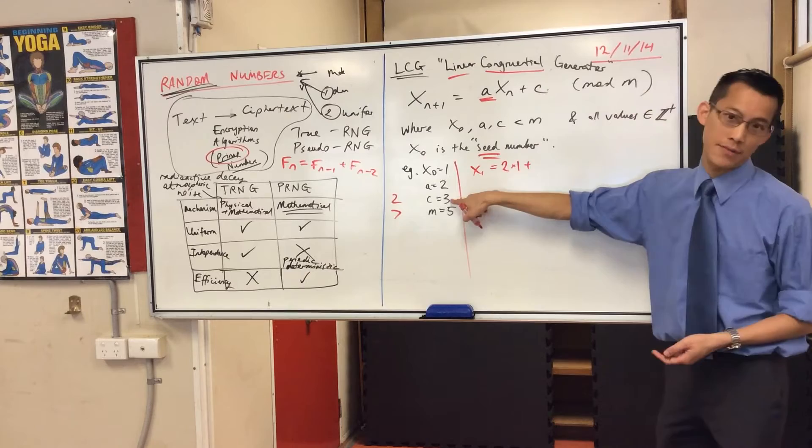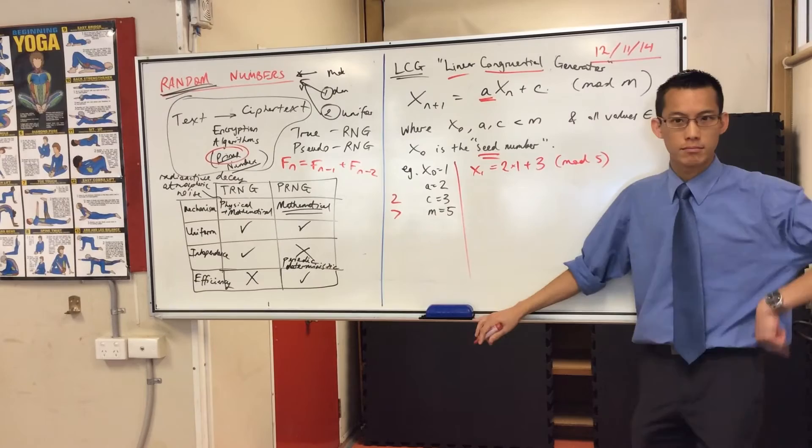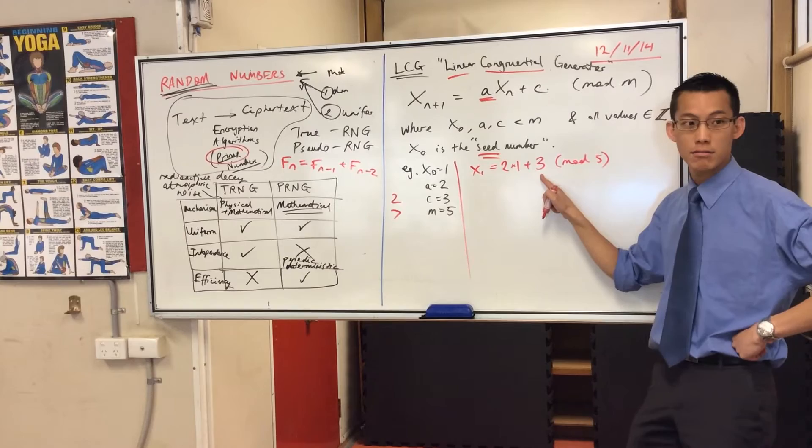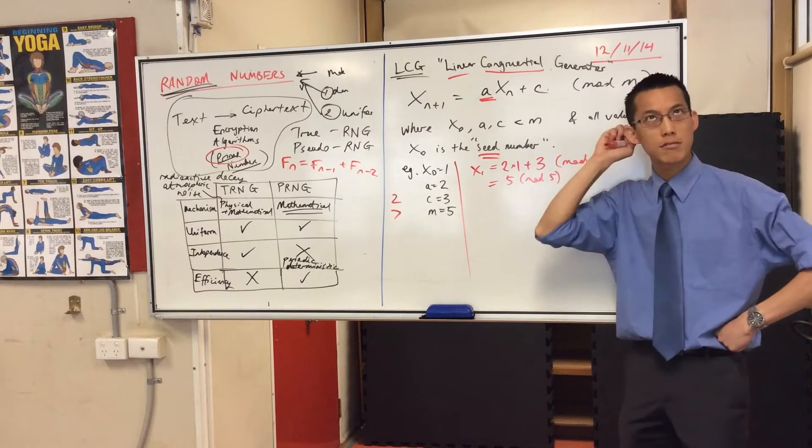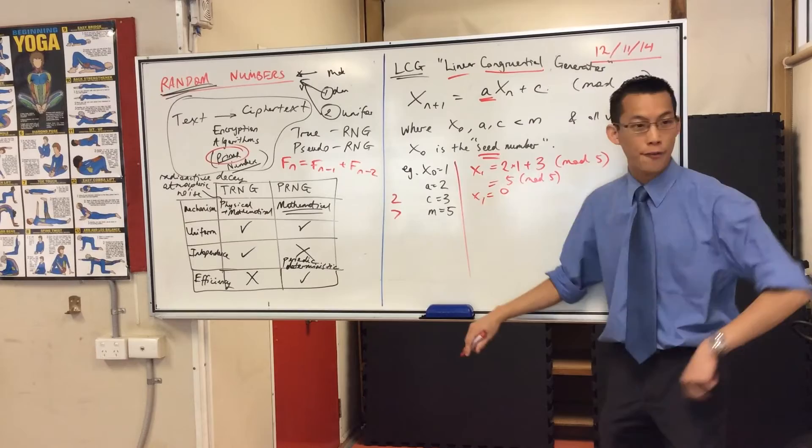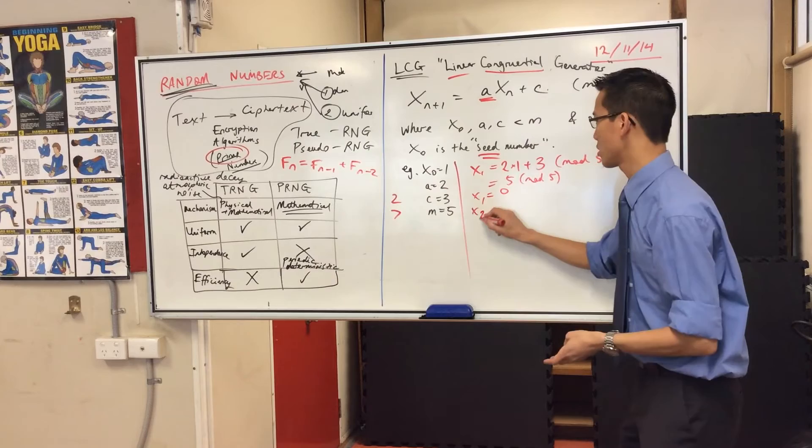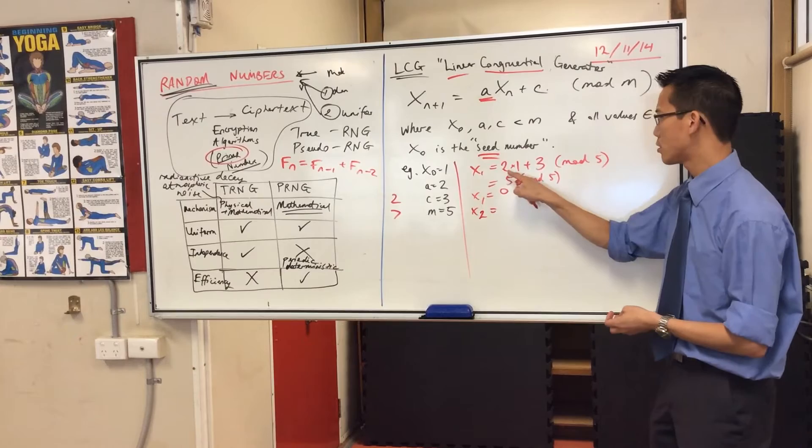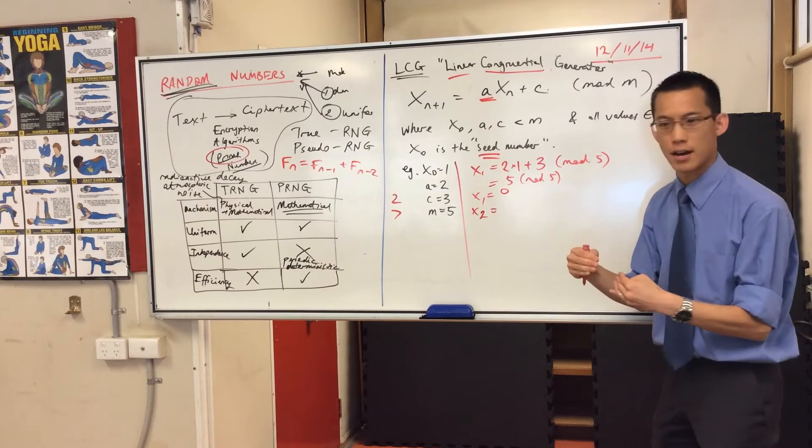That's going to be two times one, you're going to add this constant c, and then you're going to go mod five. Let's work this out. Two plus three is five, so this is five mod five. To do this mod bit, you say what's the remainder after I divide by five, and the answer is zero. So x1, our first real random number, is zero. Now how do we get the next one, x2? You repeat the process. We can do this a bit quicker. Two times zero plus three is three, and when you take mod five, I'm still under five, so this is just going to be three.